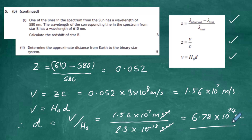The key takeaway: once we know the red shift z, we work out the recessional velocity using z = v/c, then apply Hubble's law v = H₀d to find the distance. Simply by looking at the red shift of emission spectra from stars moving away from us, we can calculate how fast they're receding and how far away they are — and that's amazing.